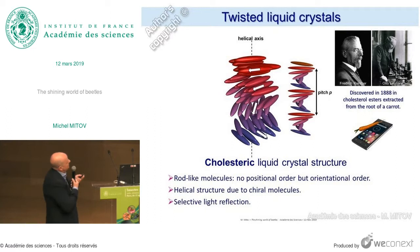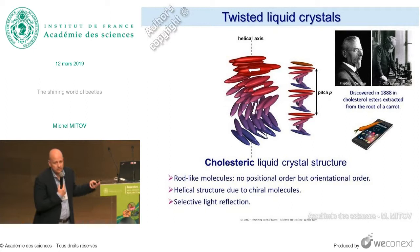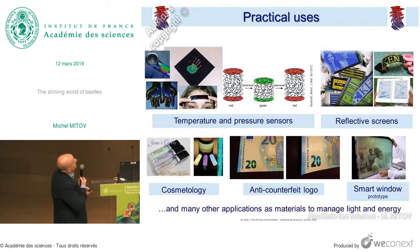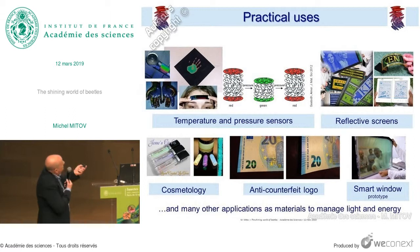The technical name is cholesteric liquid crystal structure because it was discovered in 1888 in cholesterol esters extracted from the root of a carrot — so there is a direct relationship between a carrot and a mobile phone. In practical use, because the pitch of the helix may be tuned with temperature or pressure, they have been used as temperature and pressure sensors.